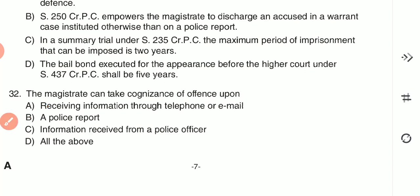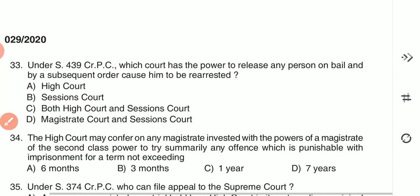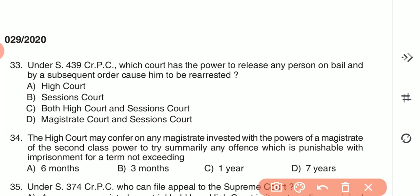Question 33: Under Section 439 CrPC, which court has the power to release any person on bail and by a subsequent order cause him to be re-arrested? (A) High Court, (B) Sessions Court, (C) both High Court and Sessions Court, or (D) Magistrate Court and Sessions Court. The answer is C — both High Court and Sessions Court have this power.